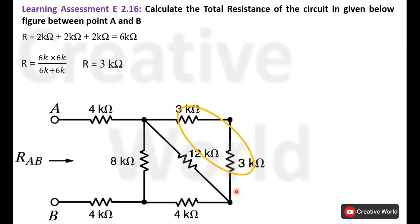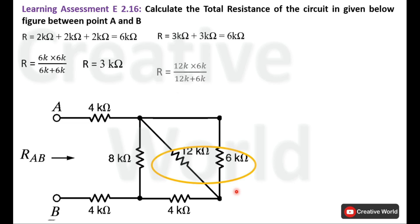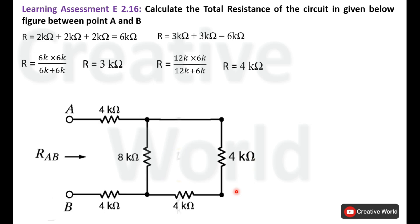Now these two 3 Kilo Ohm resistances are connected in series, and their equivalent resistance is 6 Kilo Ohm. So we replace them with a single 6 Kilo Ohm resistance. This 6 Kilo Ohm and 12 Kilo Ohm are connected in parallel. Their equivalent resistance — product divided by sum — gives 4 Kilo Ohm. We replace these two resistances with a single 4 Kilo Ohm resistance.